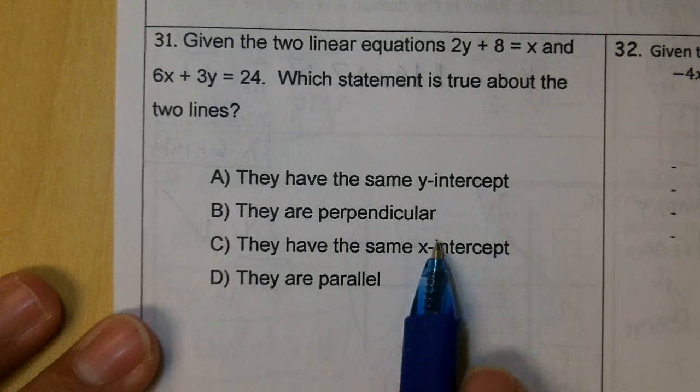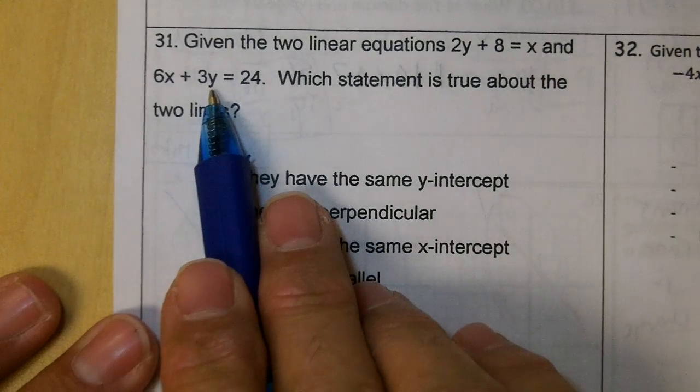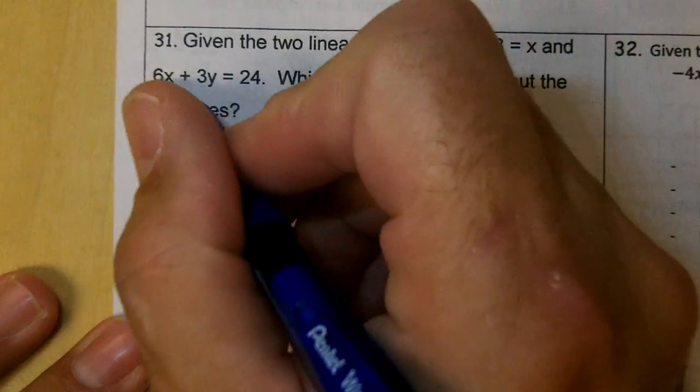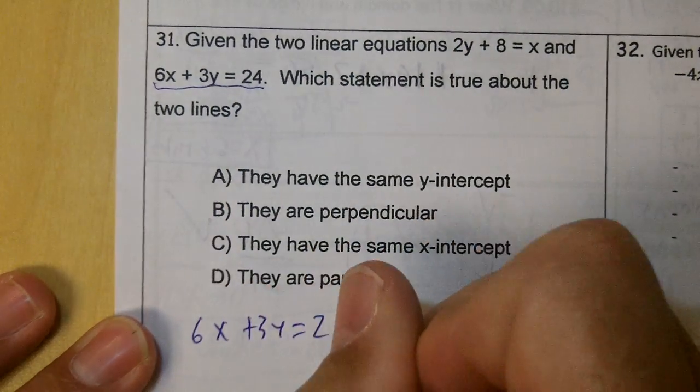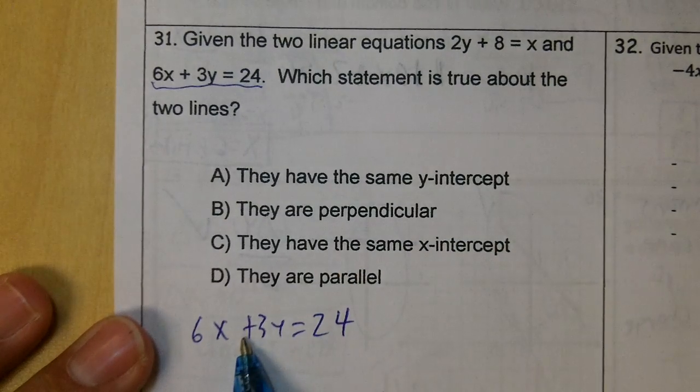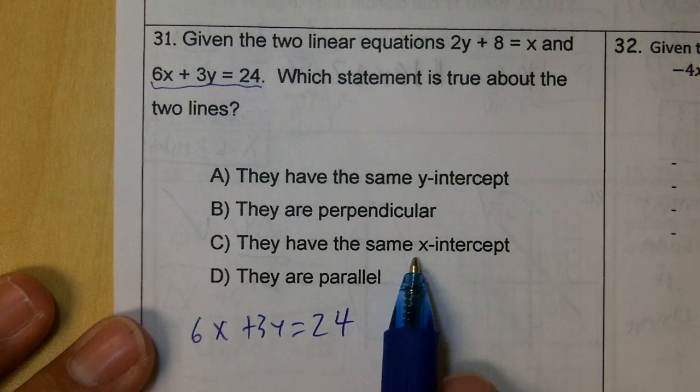Since they want to know about intercepts, we're going to make them both standard. So right here, this equation is standard. So let's write down 6x plus 3y equals 24. If you have a standard equation, you can get your two intercepts.